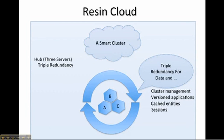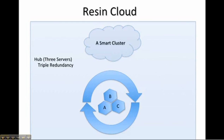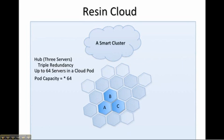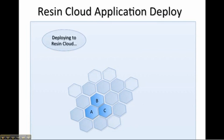You can take one server down for maintenance and still have 2 servers. Other servers in the pod are spoke servers. Spoke servers can be completely elastic — it is easy to add more capacity to a pod, just add more spoke servers. Deploying applications to Resin Cluster is no more challenging than deploying an application to a single server.